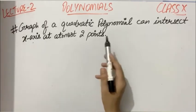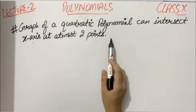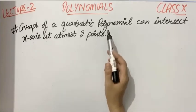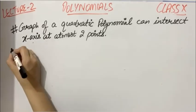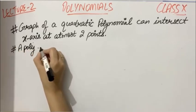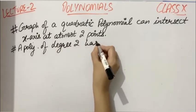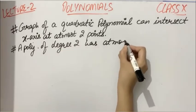The quadratic polynomial graph can intersect the x-axis at at most two points. And now you know that wherever any polynomial graph intersects the x-axis, those are the zeros. So if we talk in terms of zeros, we can say that a polynomial of degree 2 has at most two zeros.